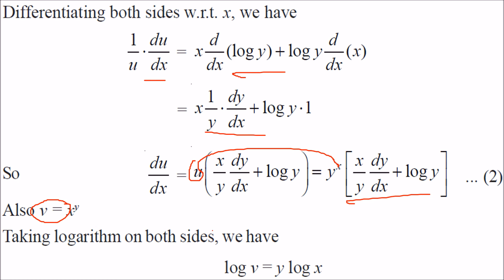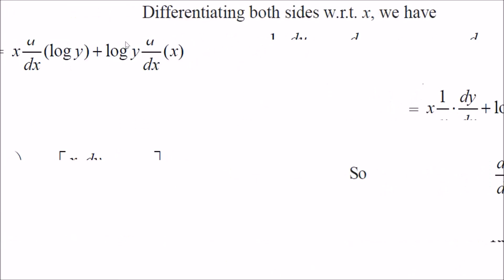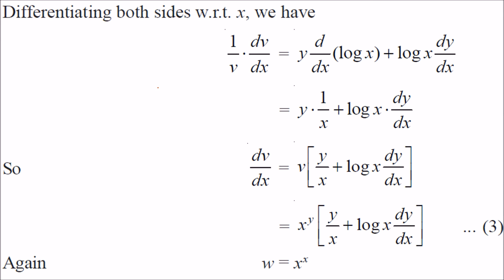For v = x^y, we take log on both sides: log v = y log x. Differentiating with respect to x using the Leibniz rule, 1/v · dv/dx = y · (1/x) + log x · dy/dx. Substituting v = x^y, we get dv/dx = x^y · (y/x + log x · dy/dx).